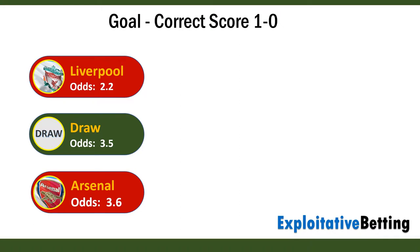Once a goal is scored, 0-0 and one of the one-goal score lines will be finished. The new current score will be 1-0 or 0-1. The change in the odds of the new current score will depend on the time that the goal was scored and the amount of anticipated action in the game. It doesn't make much difference whether the favourite or the outsider takes the lead — the odds on 1-0 and 0-1 will move in a similar direction.